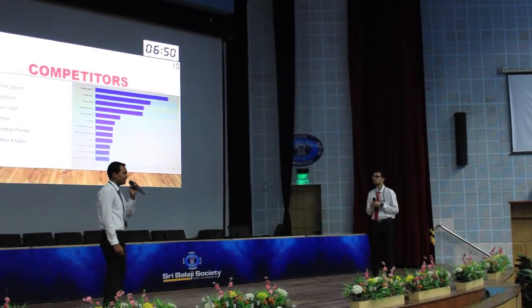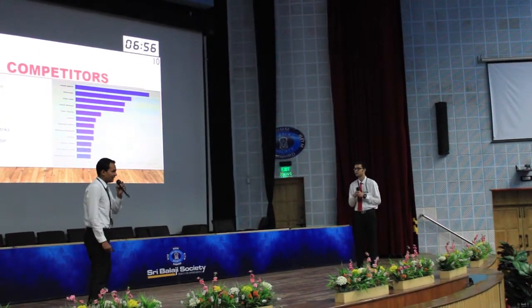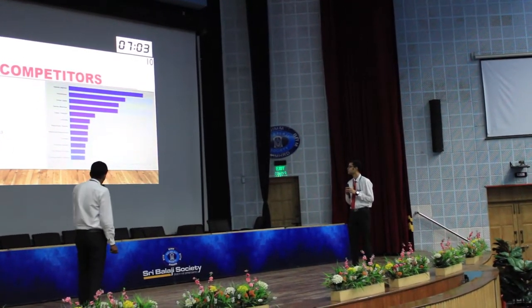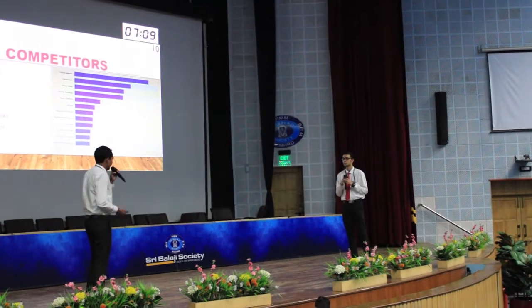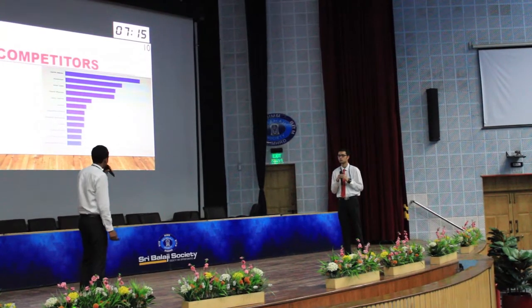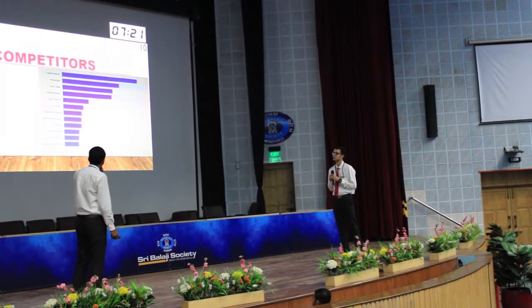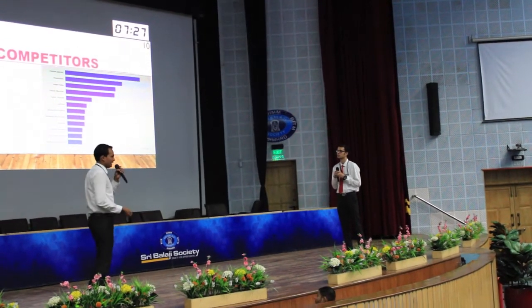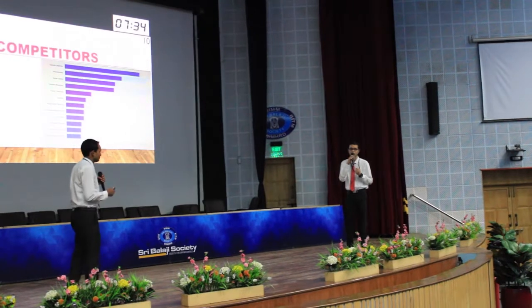Talking about the competitors of Dainik Bhaskar, it has a number of competitors in the market: Dainik Jagran, Hindustan, Amar Ujala, Lokmat, Rajasthan Patrika, and Prabhat Khabar. We have shown in the bar graph that according to the data of 2017, the number of newspaper readers are compared. For the comparison of Dainik Jagran with Dainik Bhaskar, Hindustan, and Amar Ujala, the numbers are given according to the readers. Note that Hindustan is not Hindustan Times — it is Hindustan, which is circulated in North India.